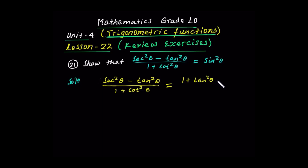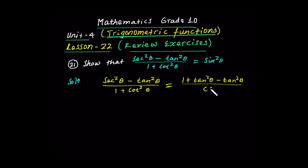Minus tan squared theta, all over one plus cot squared theta. One plus cot squared theta is cosec squared theta. So here, one plus cot squared theta equals cosec squared theta — that's the identity. This is cosec squared theta. Tan squared theta minus tan squared theta cancels. This is equal to 1 over cos squared theta.